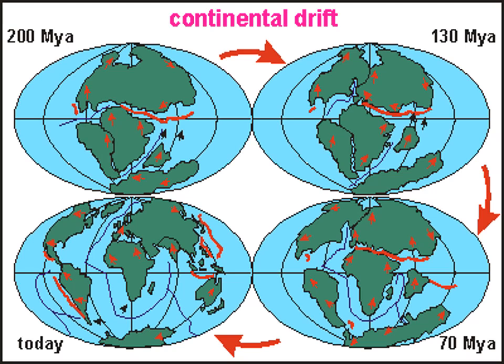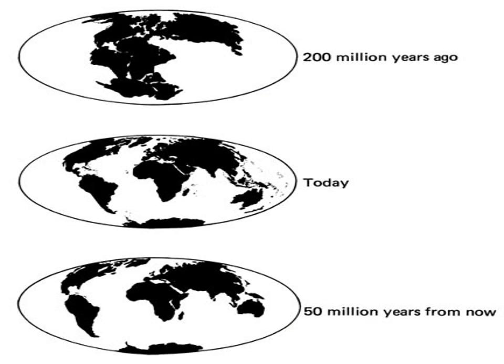If you look at this diagram, the top left shows you 200 million years ago, the top right 130 million years ago, the bottom right 70 million years ago, and then today. This reverses back in time to show that the continents were once all joined, and over time they have spread out — some moving towards each other and some away. If you look at the arrows you can see which direction they're moving.